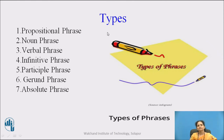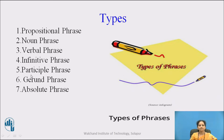Now let us discuss about the types of phrases. The first one is prepositional phrase, the second one is noun phrase, the third one is verbal phrase, next is infinitive phrase, then participle phrase, gerund phrase, and absolute phrase. All these types we are going to discuss in detail.